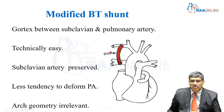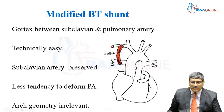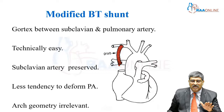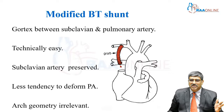Coming to the modified BT shunt: here, you place a Gore-Tex graft between the subclavian and the pulmonary artery. It is technically easier than the classic BT shunt. The subclavian artery is preserved, upper limb ischemia is prevented, and it does not cause deformity of the PA — the PA tends to maintain its anatomical nativity. Another important thing: arch geometry is relevant in the classic, but in the modified BT shunt, whether it is a right or left arch, you can proceed with whichever side you want.